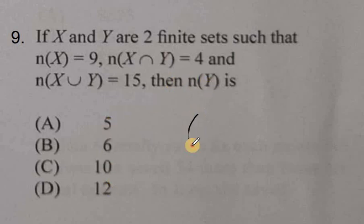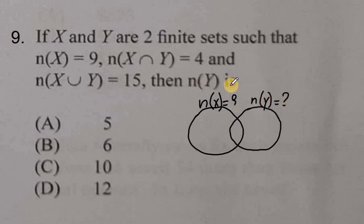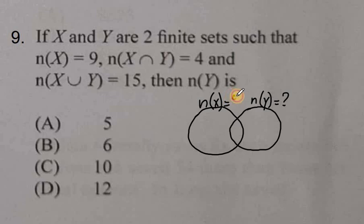Let's put down that information. The number of elements in set X is 9. Now remember, set X and Y are intersecting sets, so they have common members. The number of elements in set Y is what we're asked to find out. We're told the number of elements in set X is 9, and in the intersection the number of elements equals 4. So let's put the 4 here in the intersection.